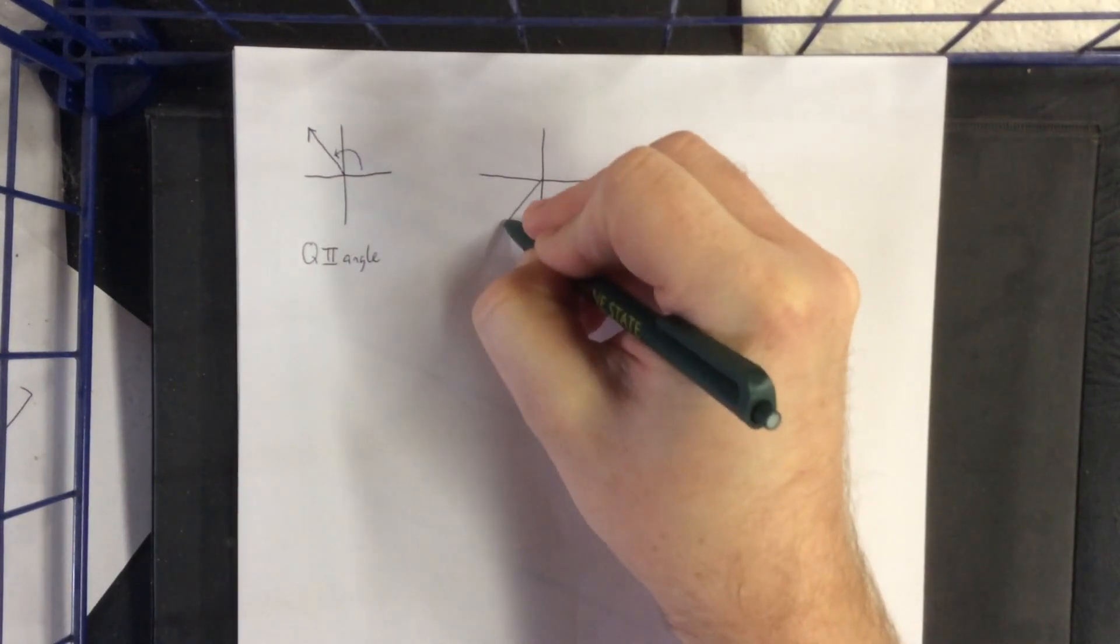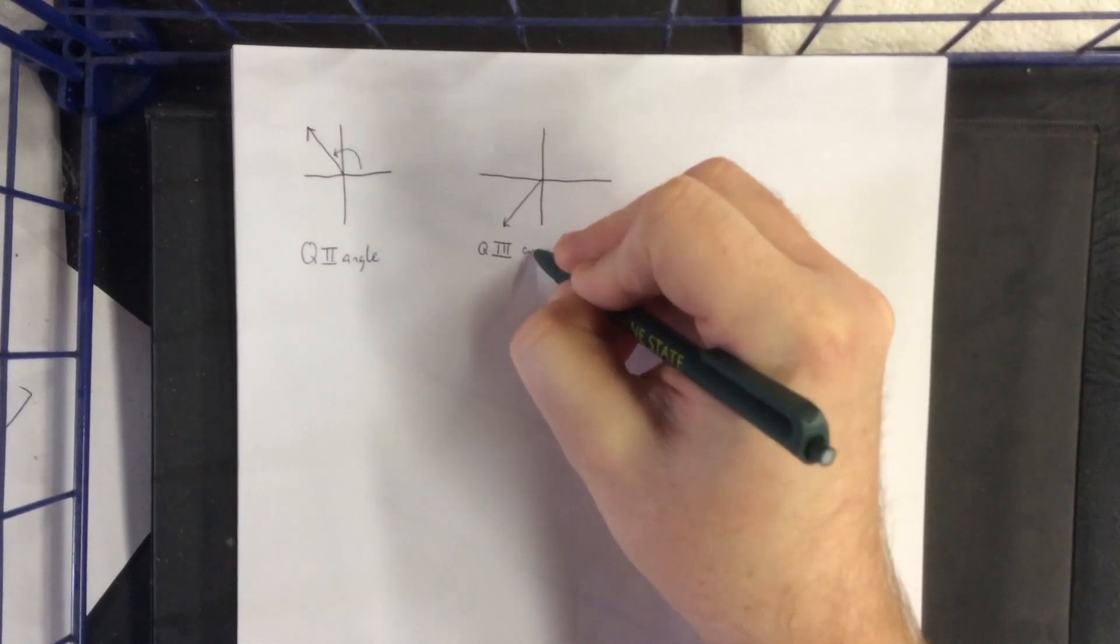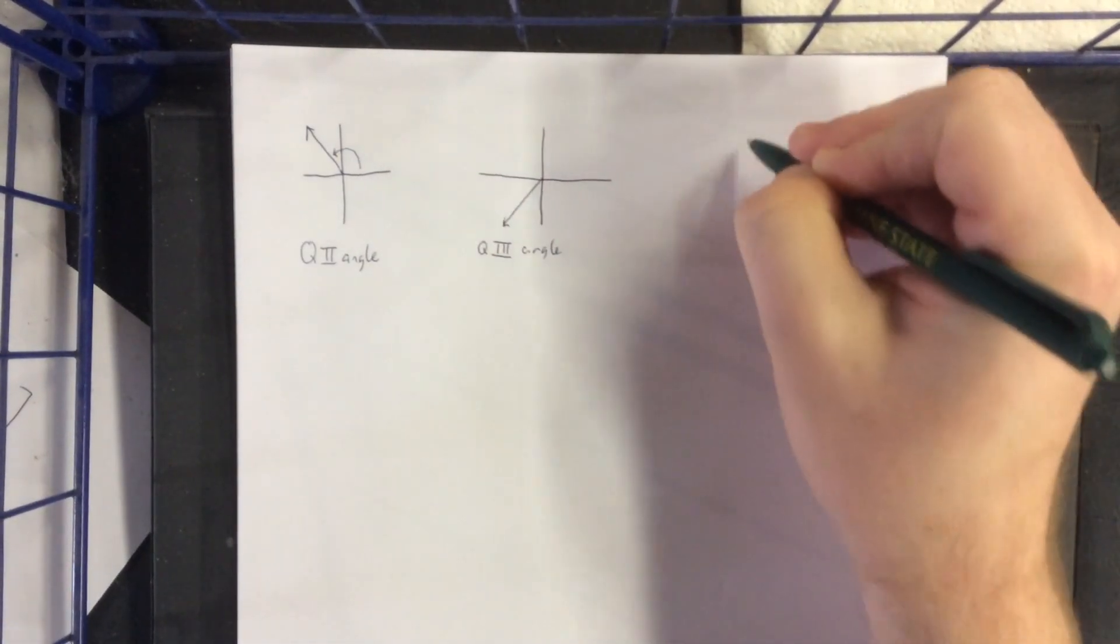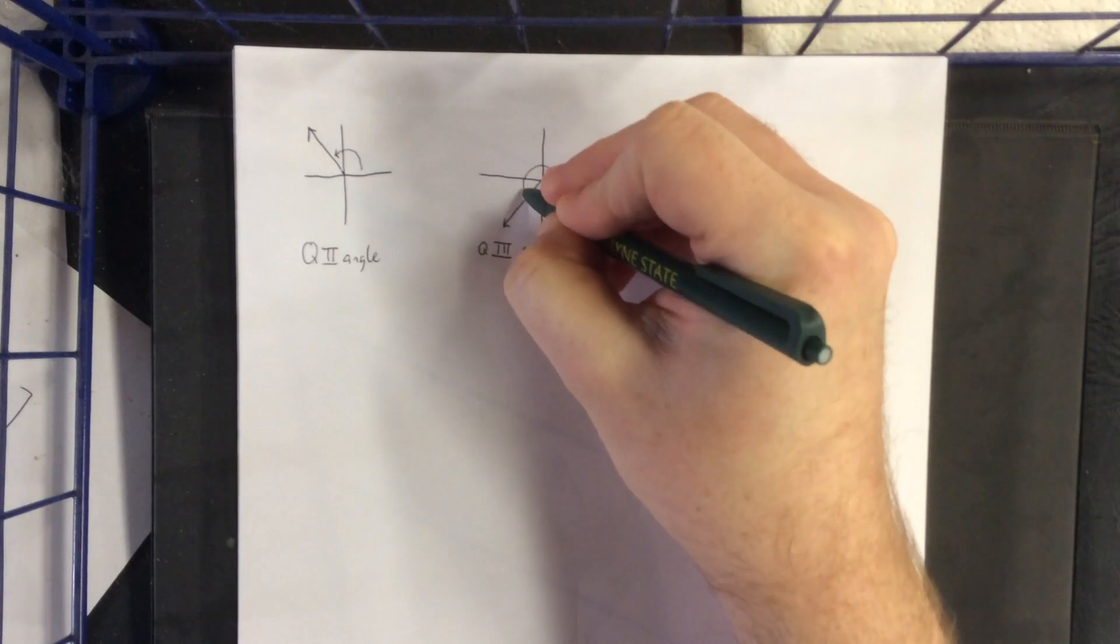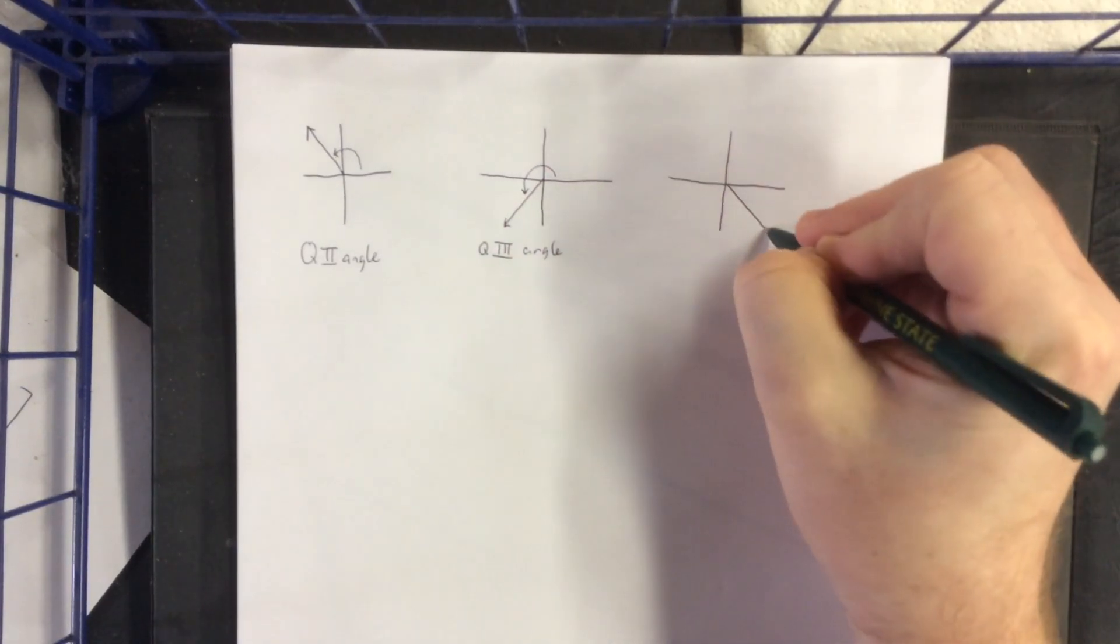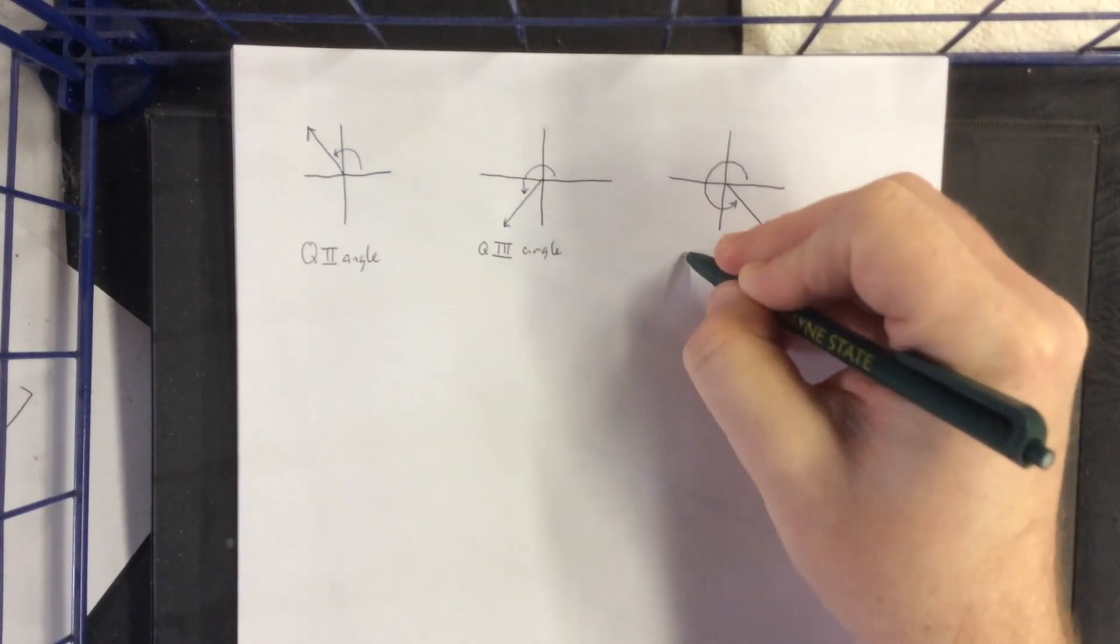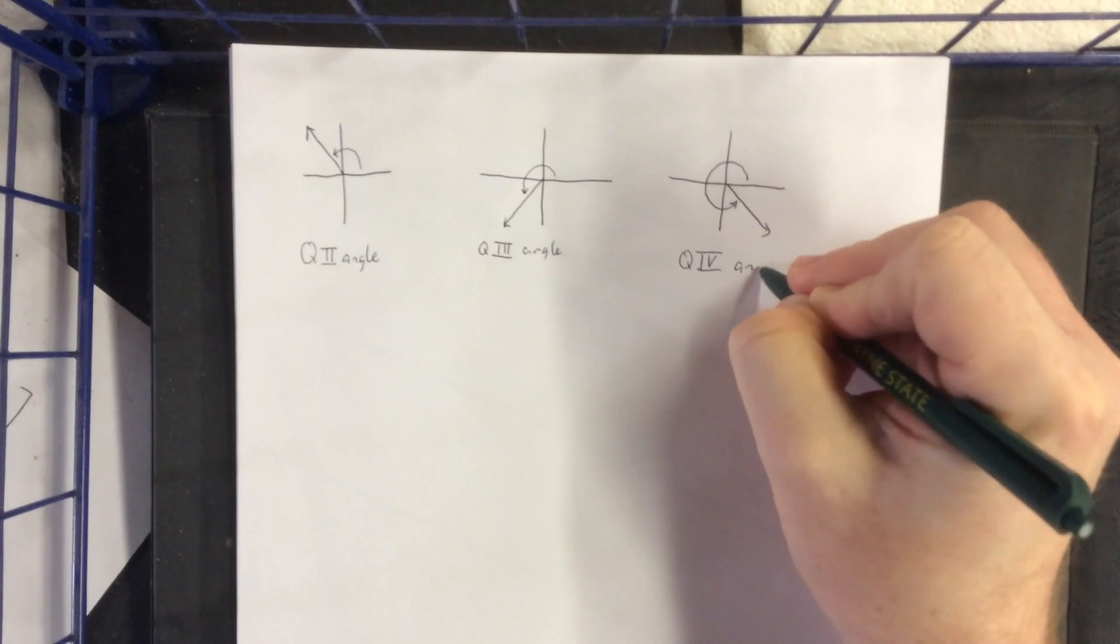A quadrant 3 angle will be in this direction. Quadrant 3 angle. Do a rotation like this, for example. And finally, we could also do a quadrant 4 angle, which would look kind of like this. Quadrant 4 angle.